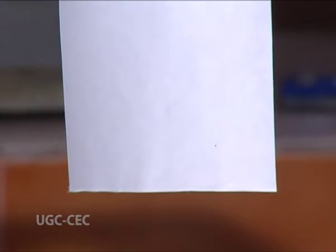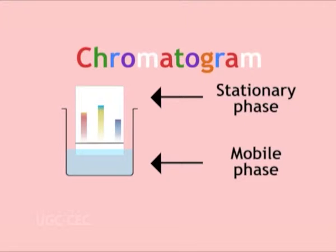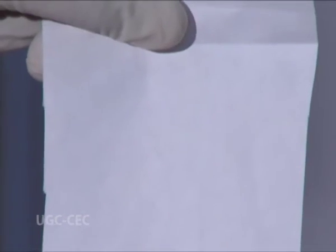Paper chromatography may be defined as the technique where separation of compounds is mainly done by the flow of solvents on a Whatman chromatographic filter paper. The stationary phase is water present in the cellulose of the filter paper, and the moving phase is an organic solvent which is immiscible with the stationary phase. The solute, called the sample, gets distributed between these two phases. In paper chromatography, the filter paper acts as a support to the stationary phase.